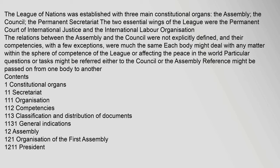The League of Nations was established with three main constitutional organs: the Assembly, the Council, and the Permanent Secretariat. The two essential wings of the League were the Permanent Court of International Justice and the International Labour Organization. The relations between the Assembly and the Council were not explicitly defined, and their competencies, with a few exceptions, were much the same. Each body might deal with any matter within the sphere of competence of the League or affecting the peace in the world.